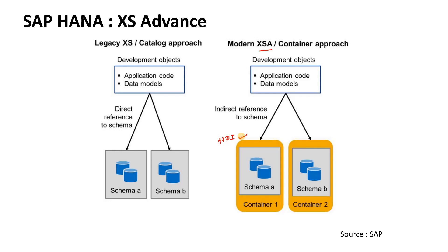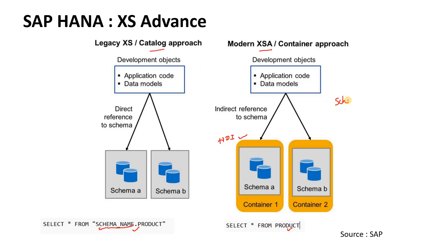The basic difference with XSA is that we used to call objects by schema earlier; now we can directly call objects or tables without specifying a schema. In Extended Services Classic, also called the catalog approach, schema was mandatory. Here we have a schema-less approach. These containers are called HDI containers — HANA Deployment Infrastructure — and we'll be creating a lot of those.